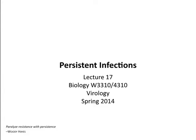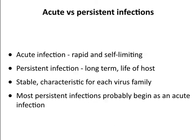Today we're going to cover the other pattern of infection that we started last time: persistent infection. Let's compare this to acute infections, which we talked about last time. Acute infections are relatively rapid, but the key is self-limiting—they're over in a certain amount of time.